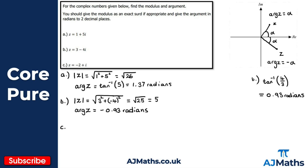Finally for part c, following the same pattern, we need the modulus. Using Pythagoras, this is the square root of minus 2 squared plus 1 squared, giving me 4 plus 1, so the square root of 5.